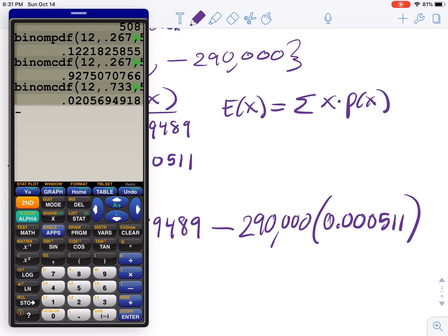Let's see. So negative, not subtraction. See the difference between those symbols? The one on the right is a subtraction symbol. The one on the left is negative. If you want, you can just put zero, then minus. In that case, you would use a subtraction sign. So $290,000 times 0.000511.